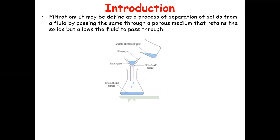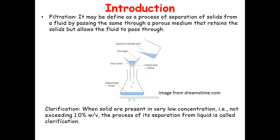Now if we look at this diagram carefully, this is the slurry — the mixture of solid and liquid — and this filter paper acts as the filtration medium. When we pour this mixture over the filter paper, it has the capacity to retain the solids and allow the fluid to pass through it. Thus in this conical flask we receive the clear liquid, or the filtered liquid. This is the actual process of filtration.